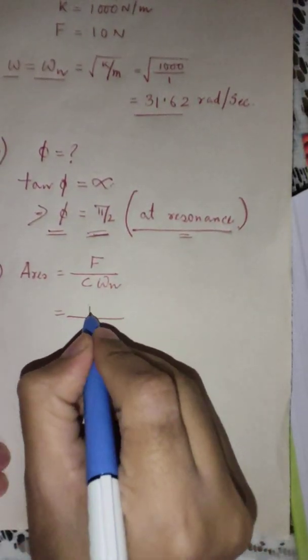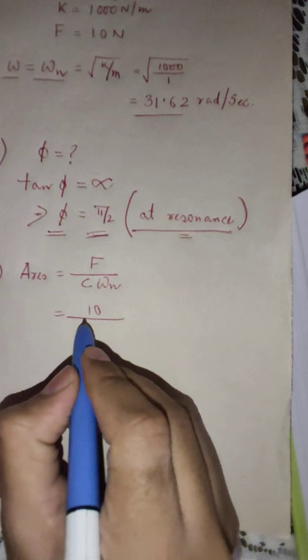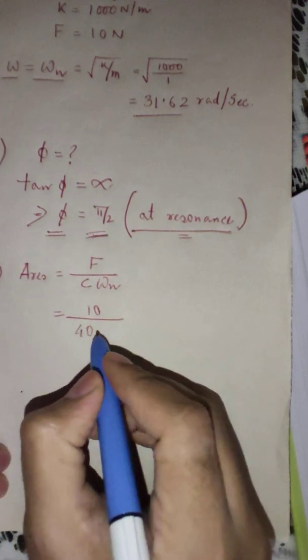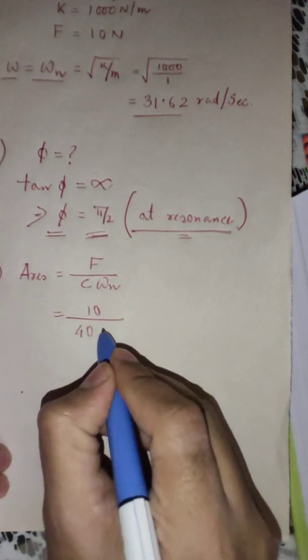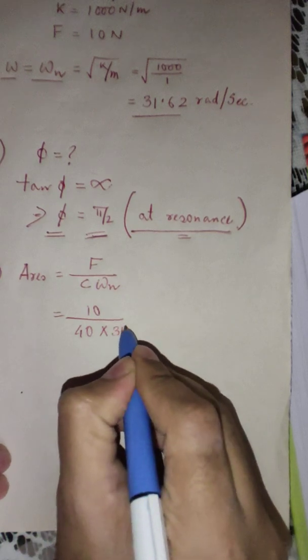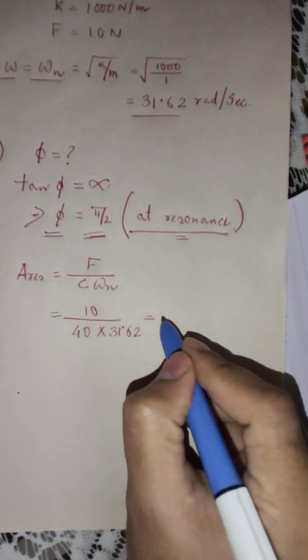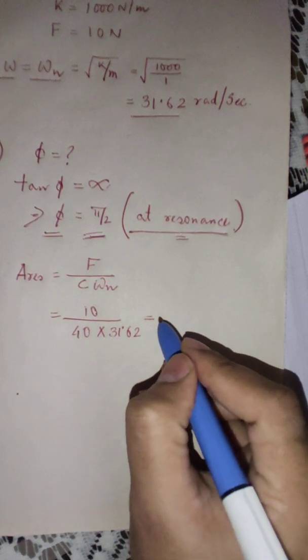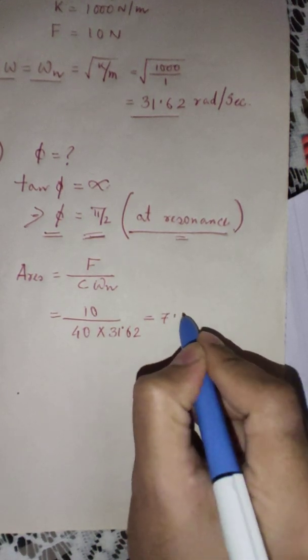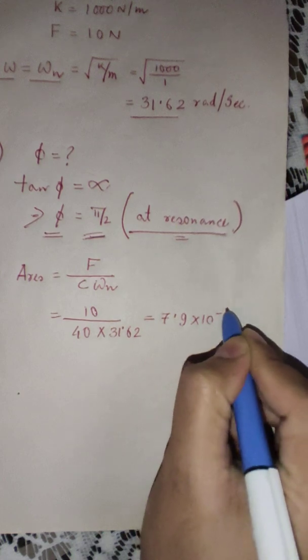Here in our case F is equal to 10 newton and C is asked to be assumed as 40, into omega n which we have just now found out, so 31.62. So this gives you amplitude at resonance as 7.9 into 10 to the power minus 3.